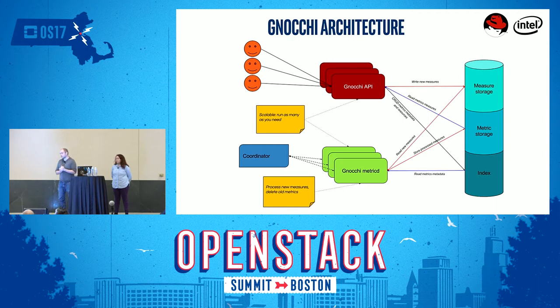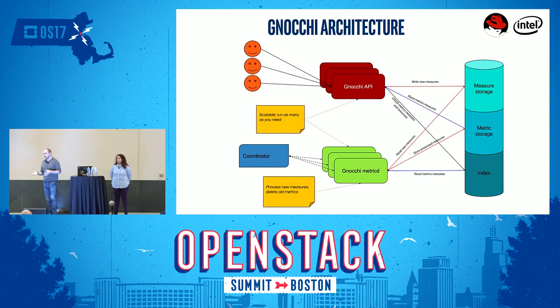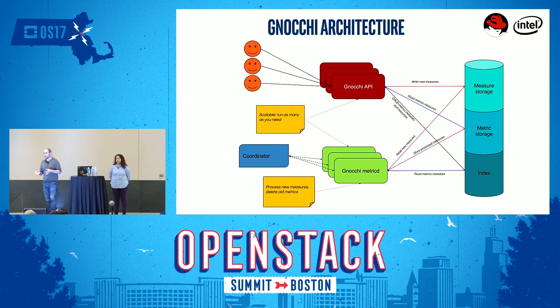Gnocchi has an architecture that is a bit different than most other OpenStack projects. It has three different storage pieces. The indexer at the bottom does not store any metrics, but it stores the list of resources in your OpenStack cloud or any kind of overall resources — switches, routers, networks, whatever you want. It's pretty agnostic in this regard. Right now there are only two drivers, MySQL and PostgreSQL, but it's pretty easy to add any other database backend.